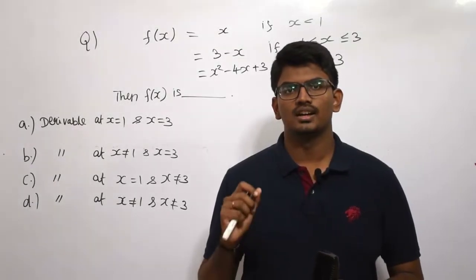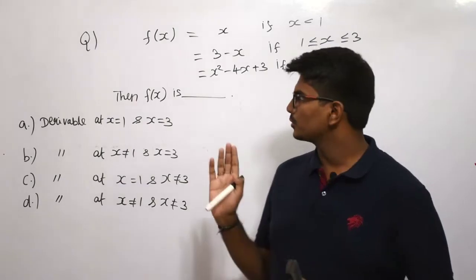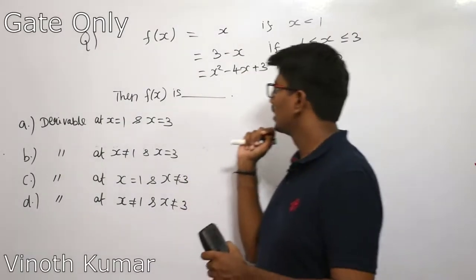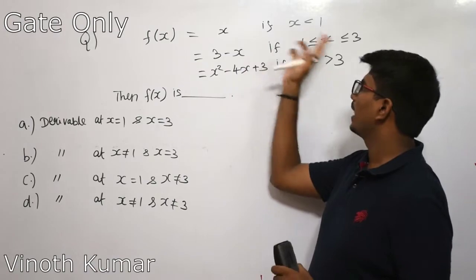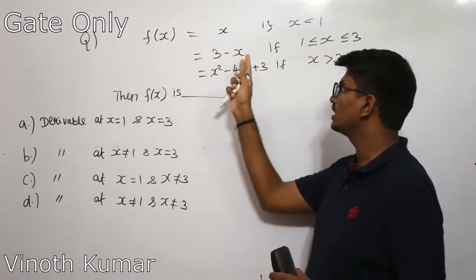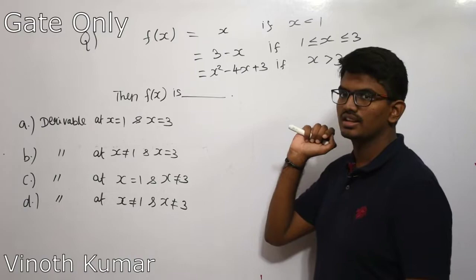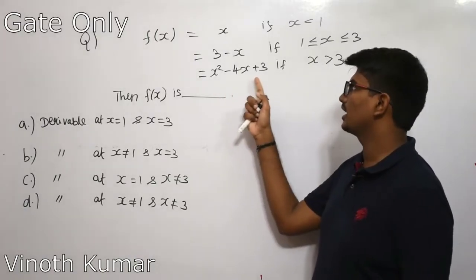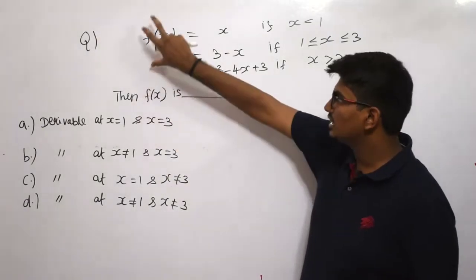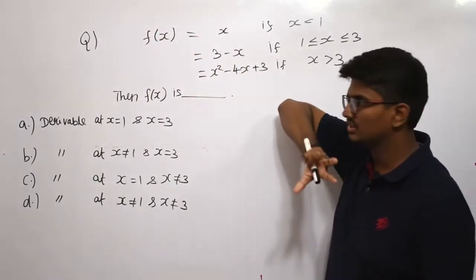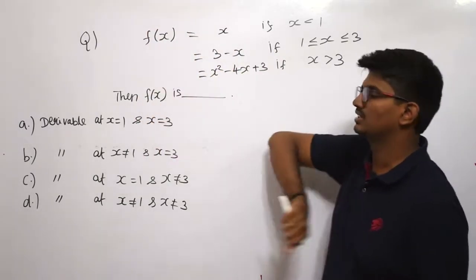We are going to see a few problems in continuity and differentiability. The first problem is: f(x) = x if x < 1; f(x) = 3 − x if 1 ≤ x ≤ 3; and f(x) = x² − 4x + 3 if x > 3. They are given one condition for f(x) and asking what we can conclude about f(x).